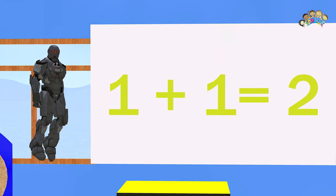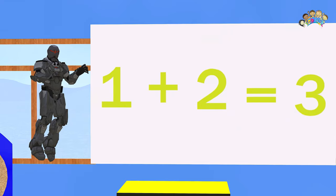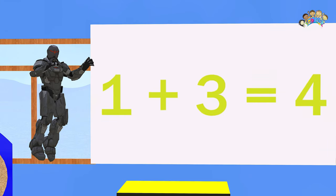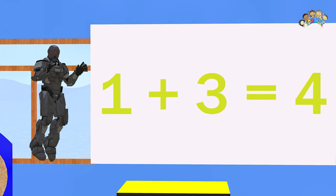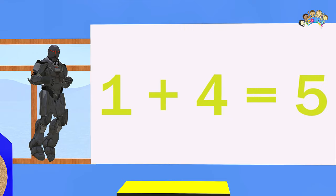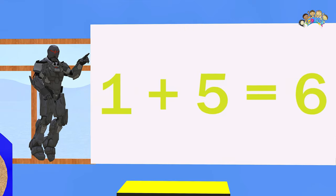So let's start with the ones. One plus one is two. One plus two is three. One plus three is four. One plus four is five. One plus five is six.